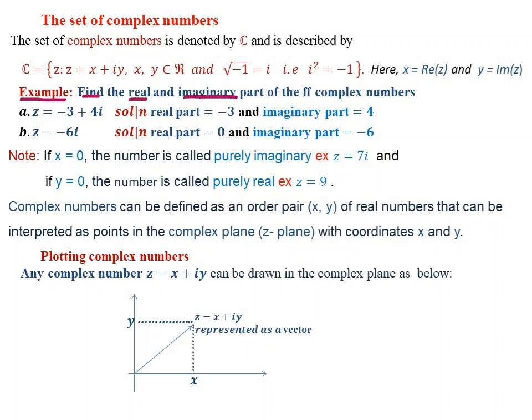Example: Find the real and imaginary parts of the following complex numbers. Given z is equal to minus 3 plus 4i. Comparing with the standard form z equals x plus iy, we identify the components directly.